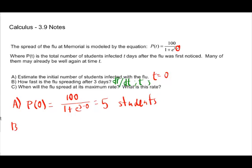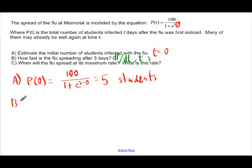Part B then is derivative time. So we take our P(t), and watch this. I'm going to rewrite this guy. I want to make it 100 times (1 plus e to the 3 minus t power) to the negative one. That's the same thing as our original equation, but it's a heck of a lot easier to take the derivative of.